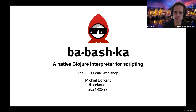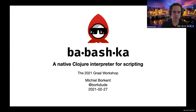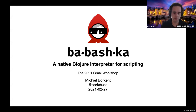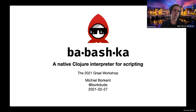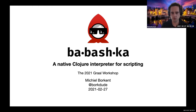I'm Michiel Borkent from the Netherlands. I'm a software developer, primarily developing software in Clojure, which is a Lisp on the JVM with excellent interop with Java and other features on the JVM. This talk is about Babashka, which is a tool that I made to solve a particular problem in the Clojure ecosystem.